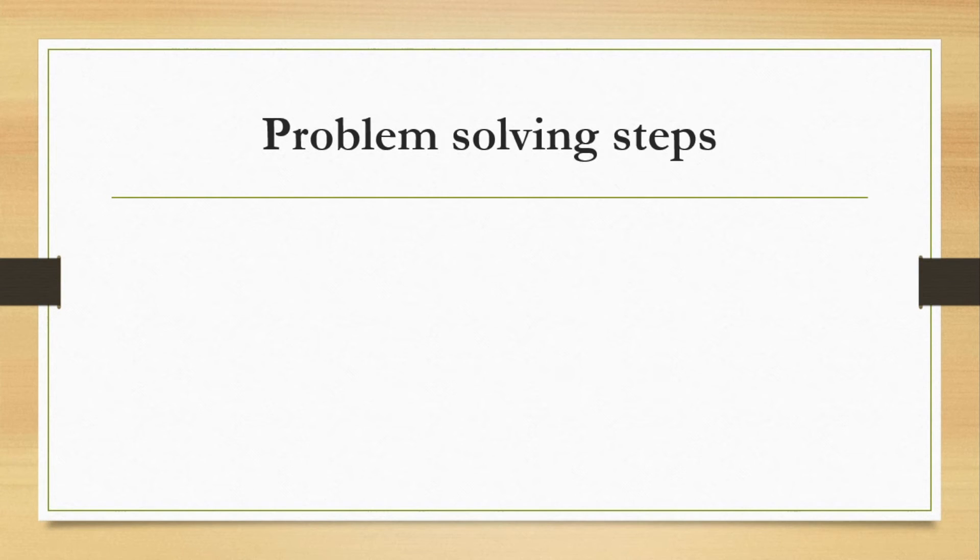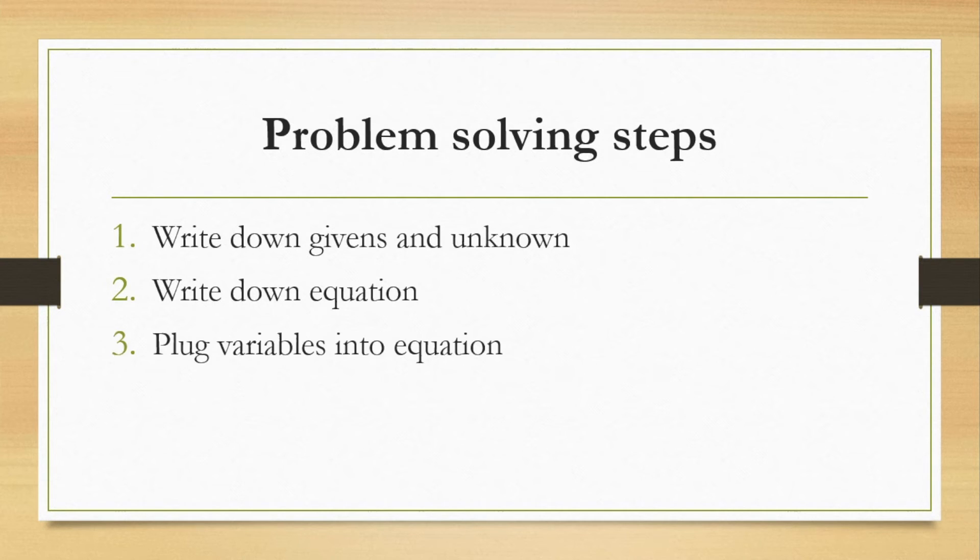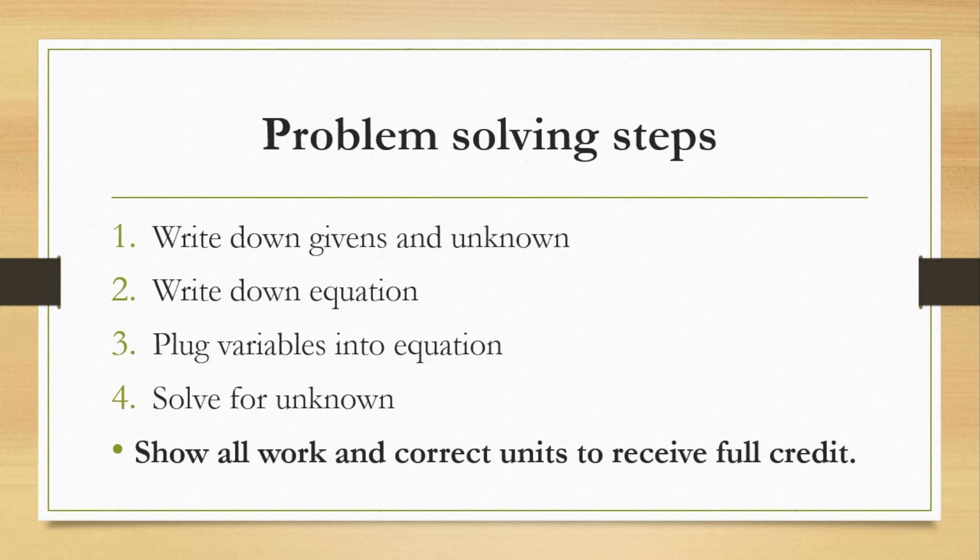Let's go through our problem solving steps. First thing we want to do is write down our givens and our unknowns. And this is something we should be doing with every type of problem that we approach, whether it's forces or in future units like kinematics and circuits. Next, we want to write down the equation. Plug in our variables into that equation. And then solve for our unknowns. Make sure that we're showing all of our work. We have the correct units. This way we'll be able to receive full credit. But also it's easier to identify where a problem went wrong if we show these steps.